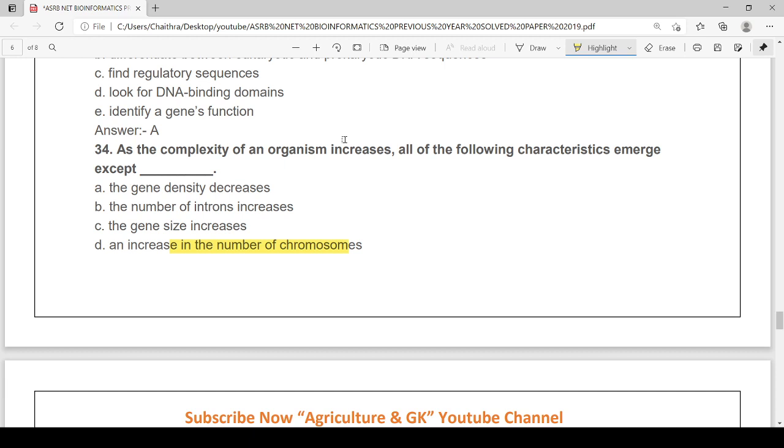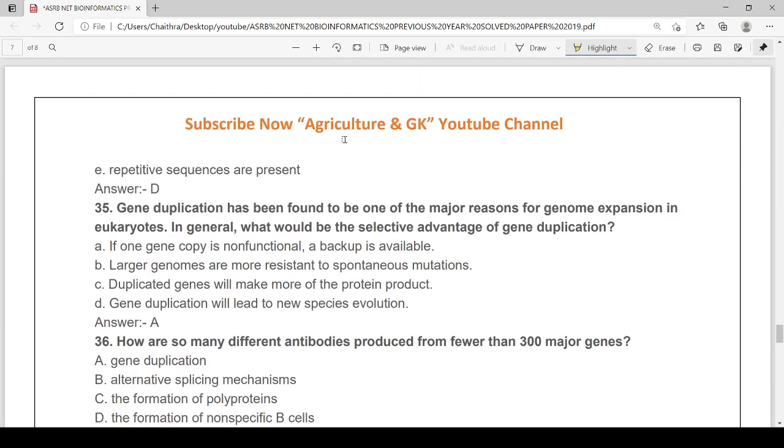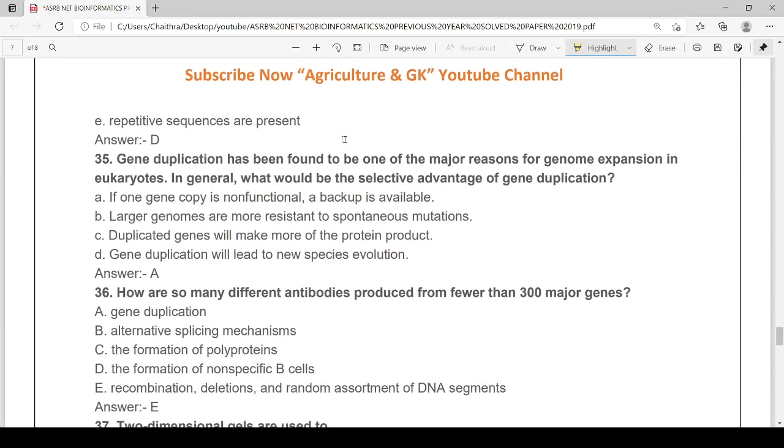When organisms' complexity increases, this is the one which will not happen: an increase in the chromosome number. Gene duplication has been found to be one of the major reasons for genome expansion in eukaryotes. What would be the selective advantage of gene duplications? If one gene copy is non-functional, the backup is available.